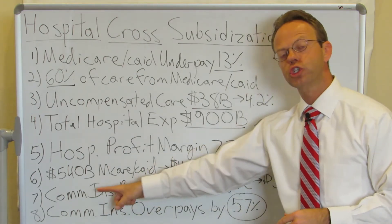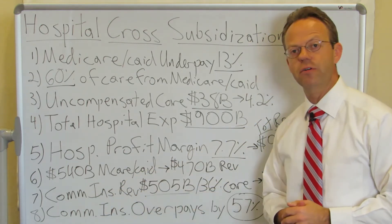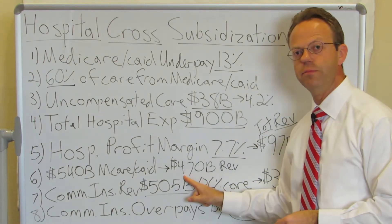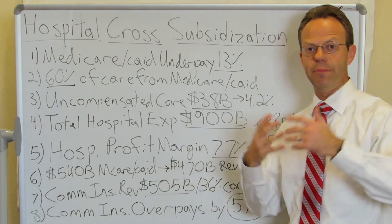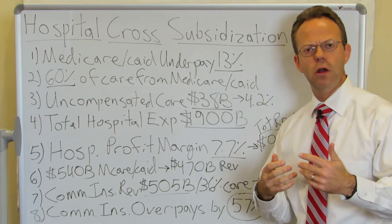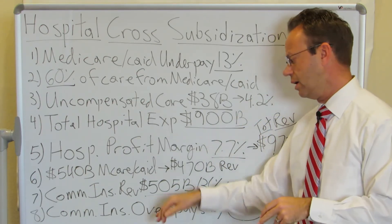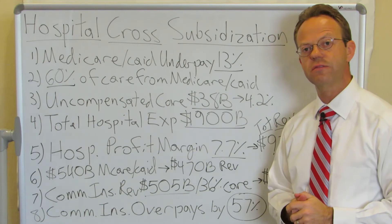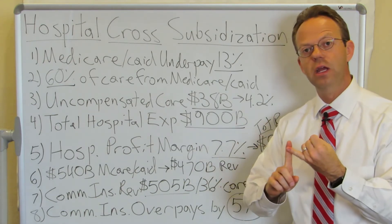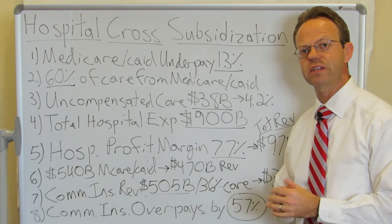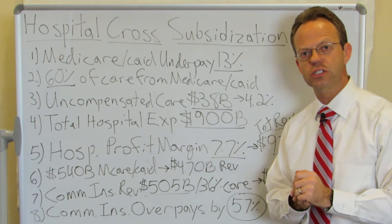That means that commercial insurance revenue for those hospitals was $505 billion — because you've got $975 billion total, you're only getting $470 billion from Medicare and Medicaid, and uncompensated care pays nothing. Now, how much care are those hospital systems providing for that $505 billion? It's only 36% of care, because 60% is from Medicare and Medicaid and 4% is uncompensated. So 36% of expense is from commercially insured patients, which is $322 billion.